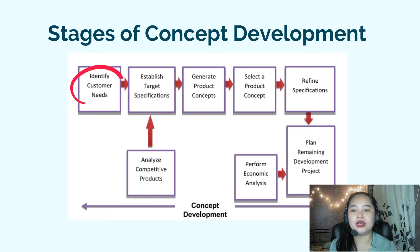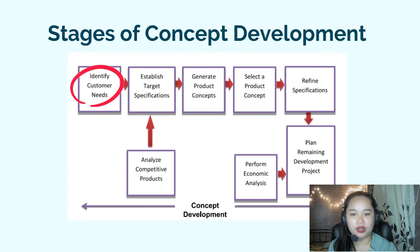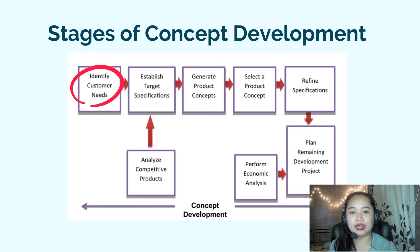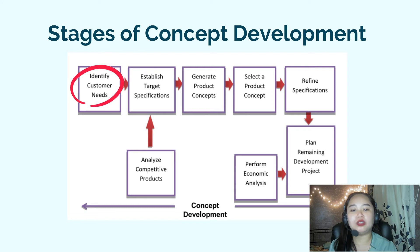This is a very important stage because it will determine the product to be produced or provided. Number two: Establish target specifications. Based on the process conducted in stage one, you can now establish target specifications of the prospective new product and/or services. A target specification is essentially a wishlist.